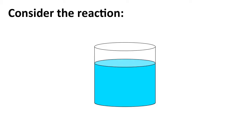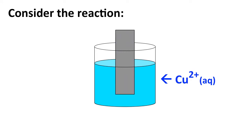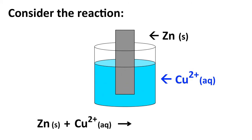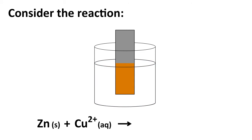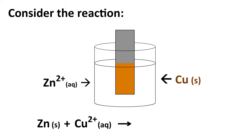Let's start by considering the reaction between copper 2+ ions and zinc metal. If we take a piece of zinc metal — a grayish silvery colored solid — and place it in a solution containing copper 2+ ions, which have a nice blue color, we see over time that a reaction takes place. The blue color of the solution fades as copper 2+ ions react. A reddish-orange, coppery colored solid forms on the surface of the zinc metal — that is the element copper — and zinc 2+ ions form in solution as well, though they are clear and colorless so we can't see them.